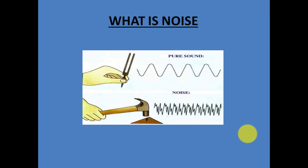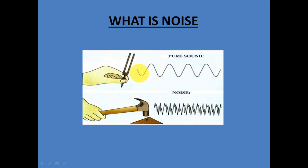Now what is noise? We already learned about sound. Sound is something which we like, which is soothing to our ears. Sound is a kind of wave — it is a sine wave. It has alternate high and low; we talked about compressions and rarefactions, and that becomes a sound. For example, a tuning fork — after we strike it, vibrations are produced and these vibrations produce a sound which is a good, pure, soothing sound.